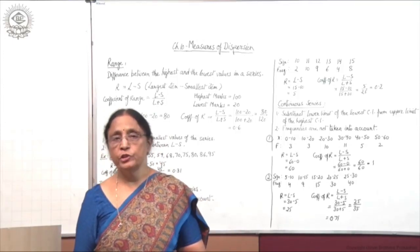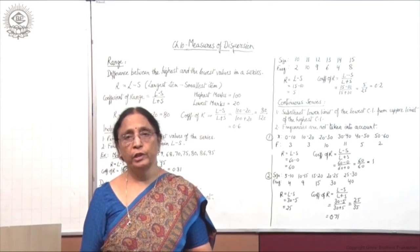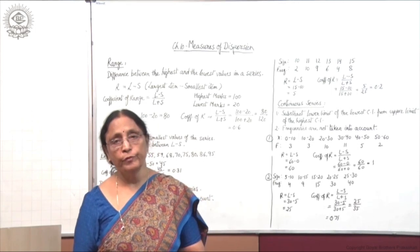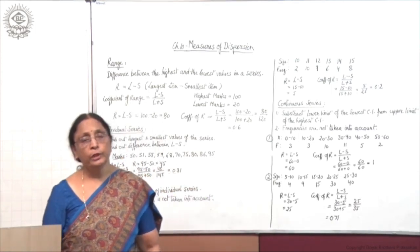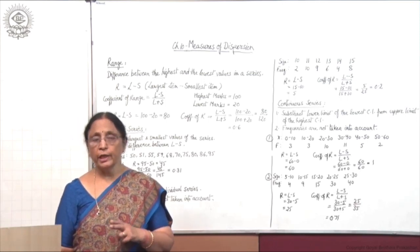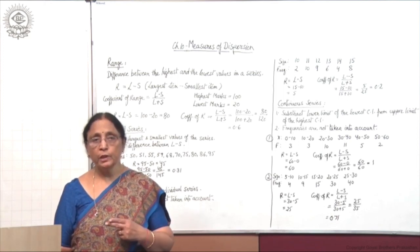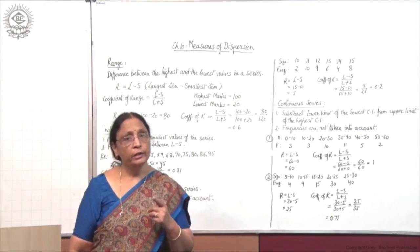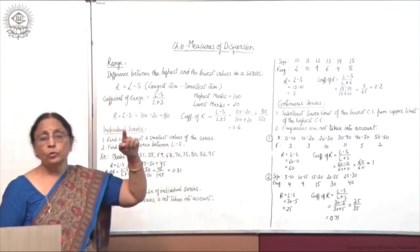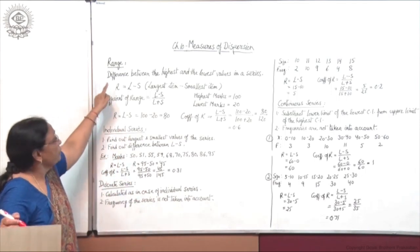Previously, we covered what is meant by measures of dispersion, their objectives and importance. There are 2 types of measures of dispersion: absolute measures and relative measures. Under absolute measures, there are 5 types. The first one is range, which we will start today.